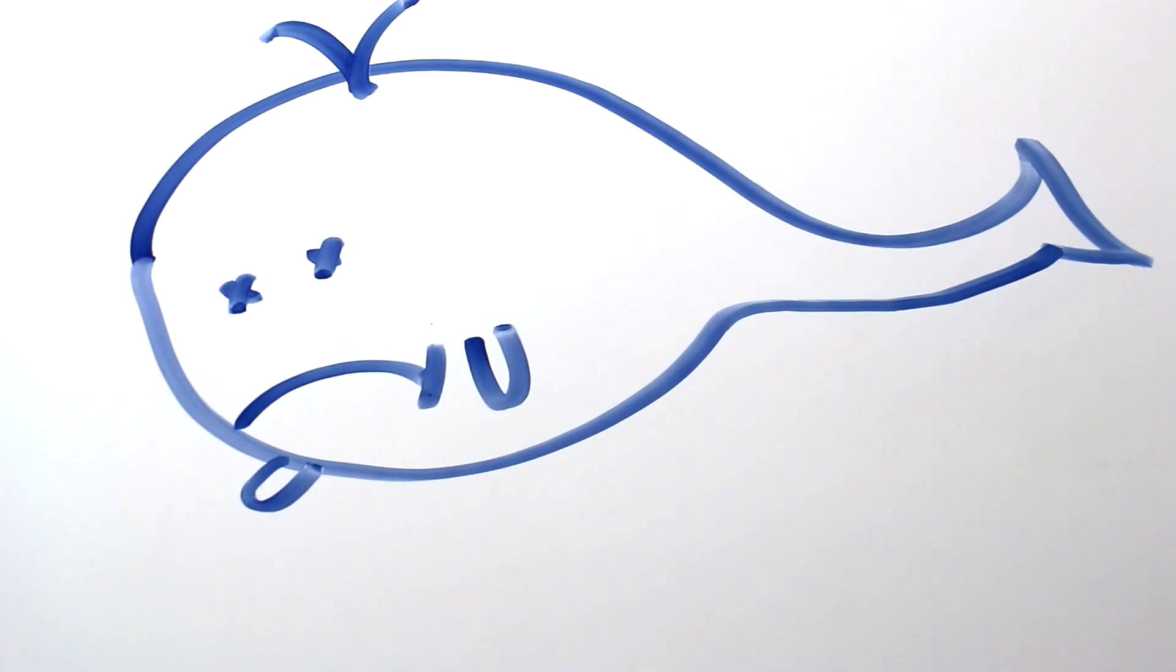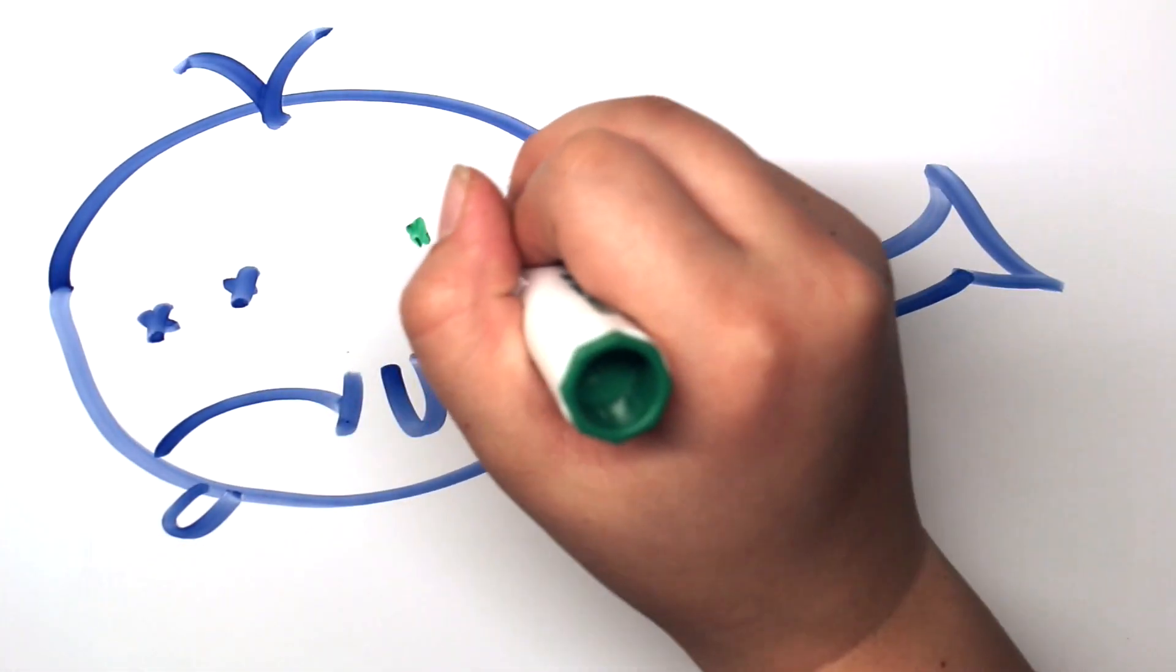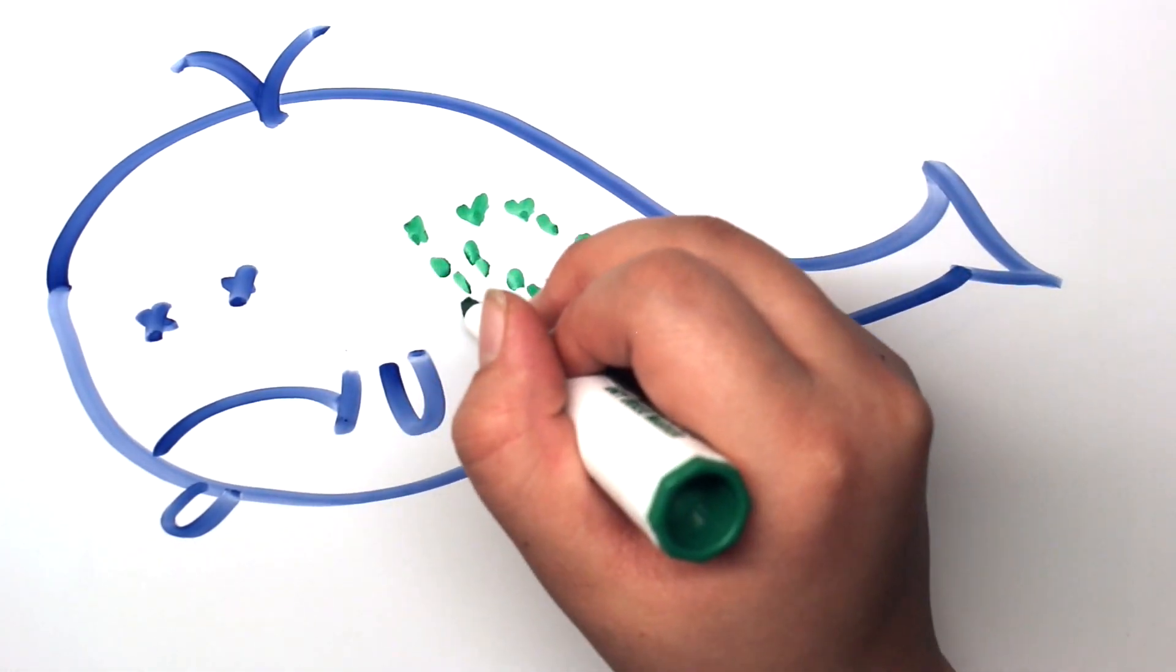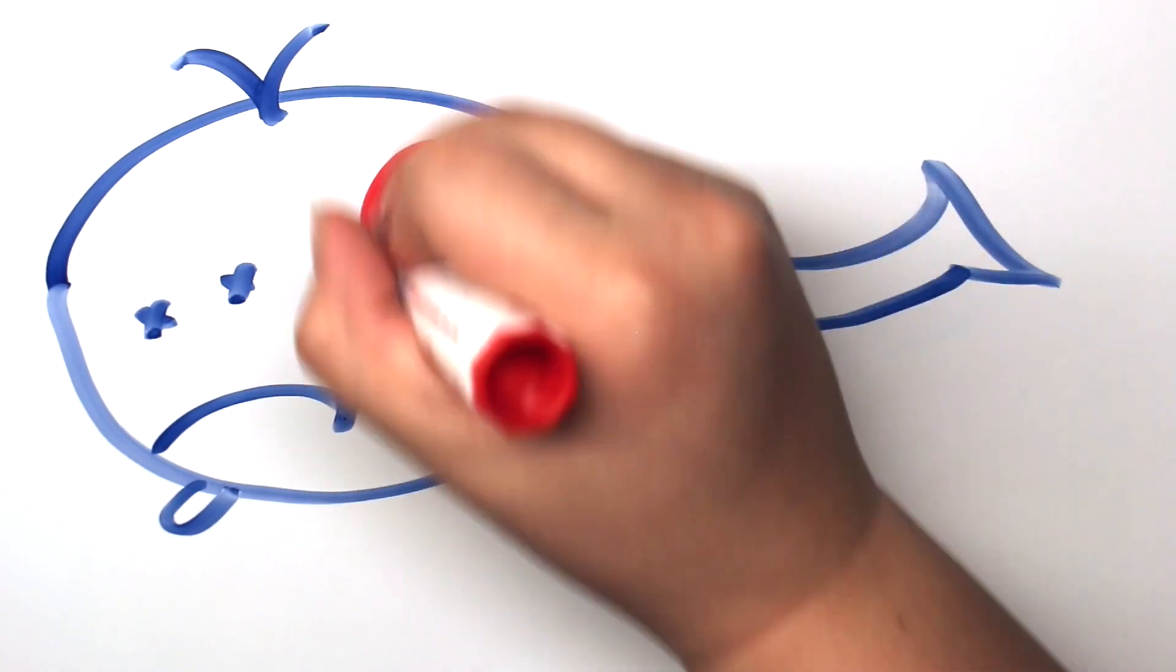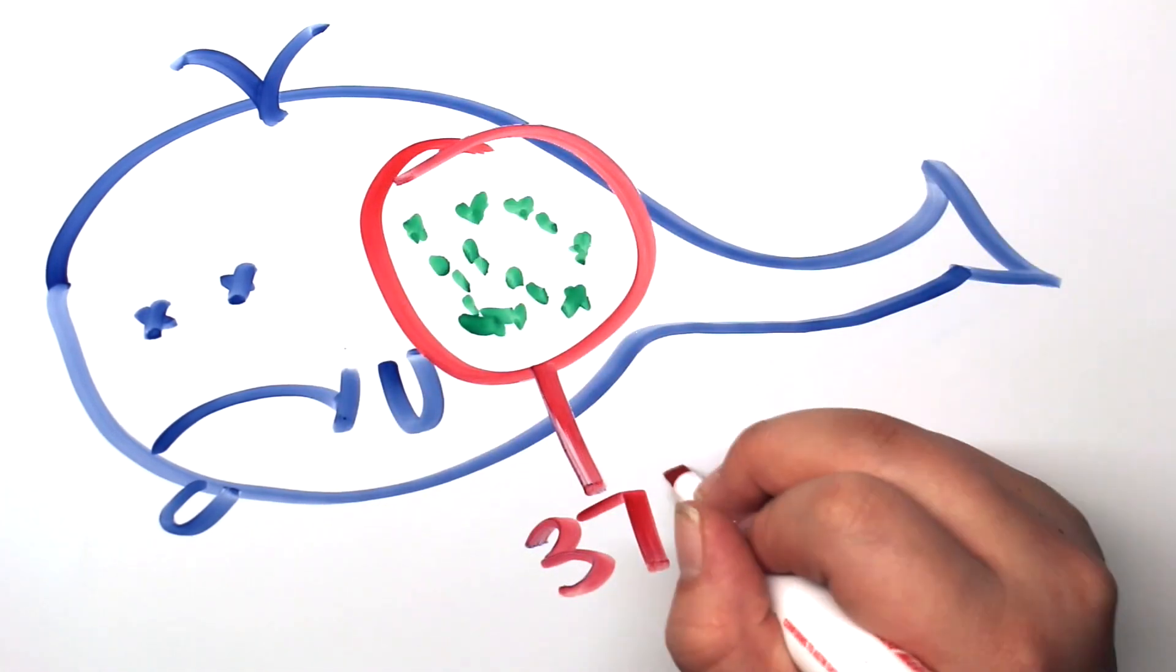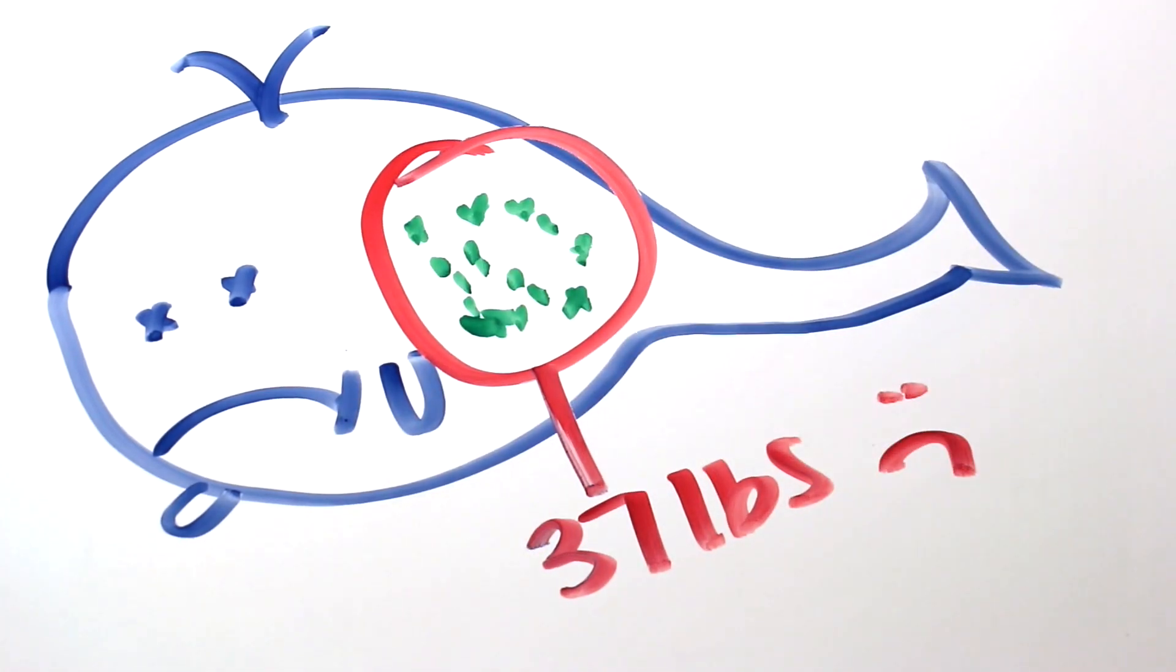In 2013 in Spain, scientists found a dead sperm whale and determined its cause of death was intestinal blockage. In its digestive system were 59 pieces of plastic waste, totaling 37 pounds in weight.